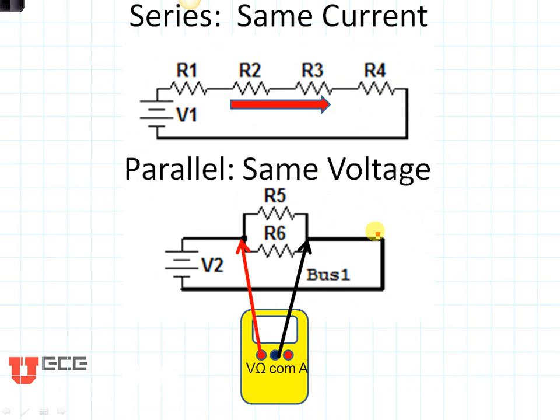If we have circuits that are in series, it means they have the same current as shown here at the top. If we have circuits that are in parallel, it means they have the same voltage as shown here at the bottom.